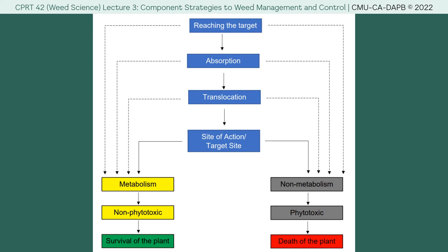Assuming the herbicide has been successfully absorbed by the plant, after absorption — as long as it is not degraded or photo-decomposed — it will undergo translocation. It will be translocated to different parts of the plant, either through the leaves via the phloem vessels, or the roots via the xylem vessels. These vessels are part of the vascular system; the phloem is responsible for food transport, including nutrients and minerals, while the xylem functions for water transport. There are two types of translocation: short distance or long distance.